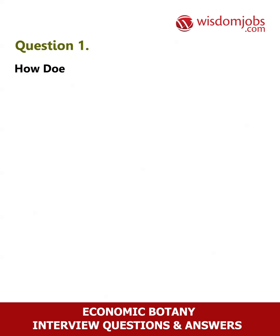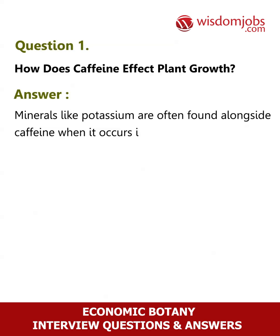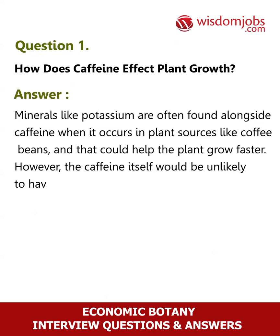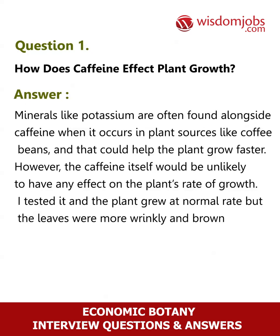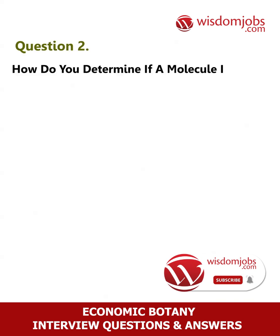Question 1: How does caffeine affect plant growth? Answer: Minerals like potassium are often found alongside caffeine when it occurs in plant sources like coffee beans, and that could help the plant grow faster. However, the caffeine itself would be unlikely to have any effect on the plant's rate of growth. I tested it and the plant grew at a normal rate, but the leaves were more wrinkly and browner.